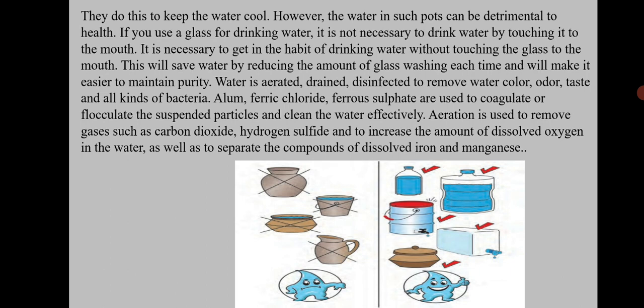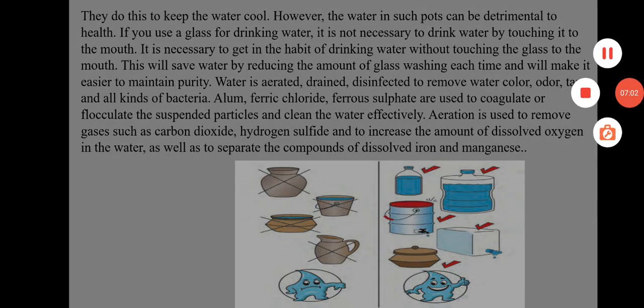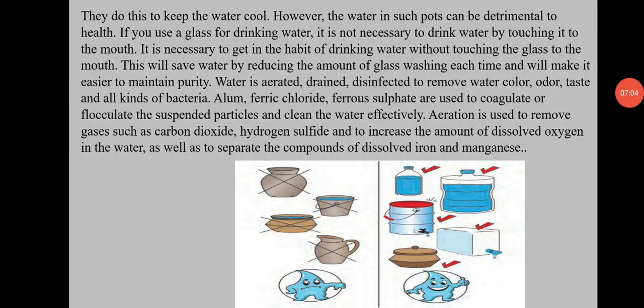If the water is aerated, drained, and disinfected to remove water colour, odour, taste, and all kinds of bacteria, alum, ferric chloride, and ferrous sulphate are used to coagulate the suspended particles and clean the water effectively. Aeration is used to remove gases such as carbon dioxide and hydrogen sulphide, to increase the amount of dissolved oxygen in water, and to separate the compounds of dissolved iron and magnesium.